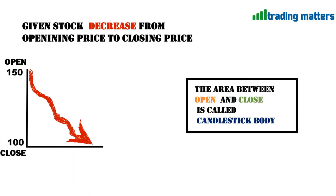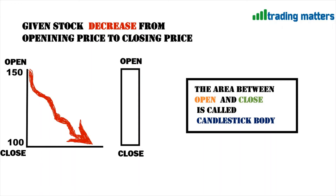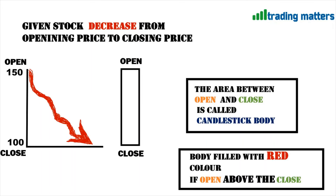The area between open 150 and close 100 is called the candlestick body. The body is filled with red color if open is above the close — so if the open price is higher than the close price, the candlestick body is filled with red color.